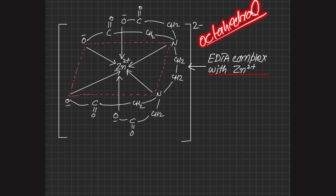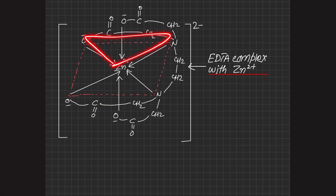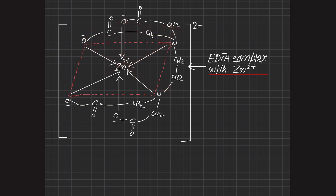In the structure you can see many rings formed — this ring forms, similarly this ring forms, and here another ring, and this ring, and this ring — so many rings are formed in the structure. Because of the large number of coordinate covalent bonds and the chelated ring structures, EDTA forms a very stable complex with zinc, which is why it is also called a chelated coordination complex.